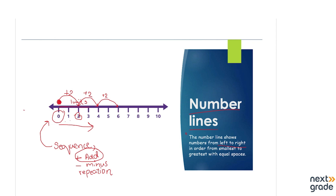Since this number line is 0 to 10, we will show some number lines which will not show you all the numbers — they will be in sequence. What can be the sequence? Either it is going to be 2, 4, 6 — like we discussed, the addition of 2 numbers in sequence. We will study on the next slide how we can identify those sequences.